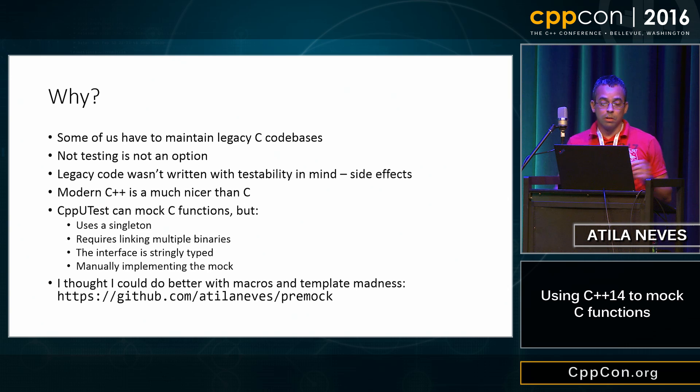Now, there is a library that can mock C functions, CppuTest, but I don't really like it too much because they have design constraints that I don't. It uses a singleton, which is a global variable, all that that entails. It requires linking multiple binaries because it uses the linker to actually link to different implementations. That means you have a bunch of tiny little unit test binaries running all of them as a pain.